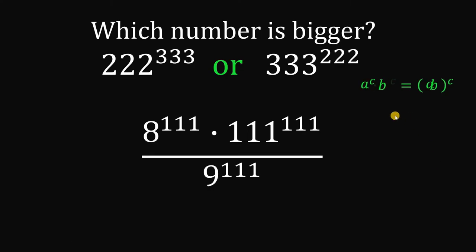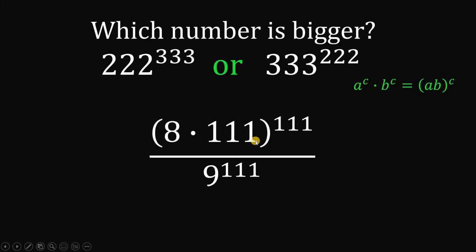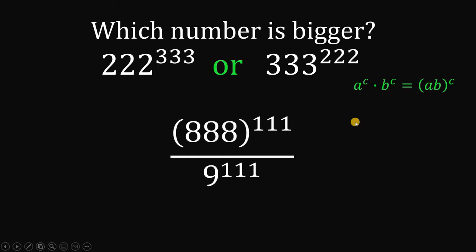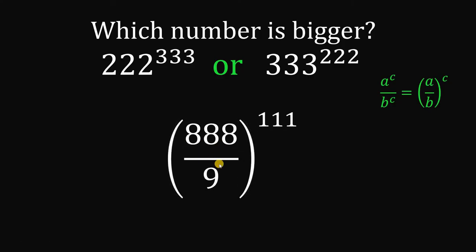Now we will use this law of exponents: a^c times b^c, with different bases but same exponent, can be written as (a times b) raised to the power of c. Therefore, the numerator can be written as 8 times 111, raised to the power of 111. And 8 times 111 is just 888. Using the rule a^c over b^c equals (a over b)^c, this simplifies to 888 over 9, raised to the power of 111.